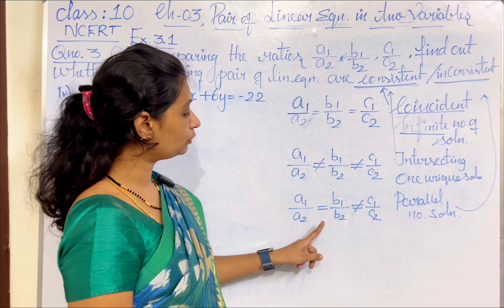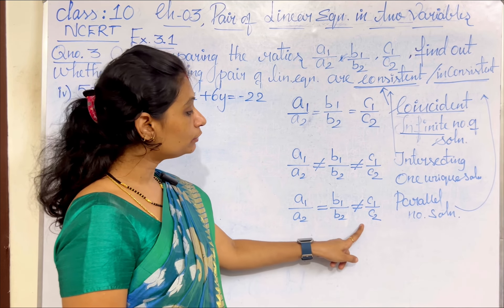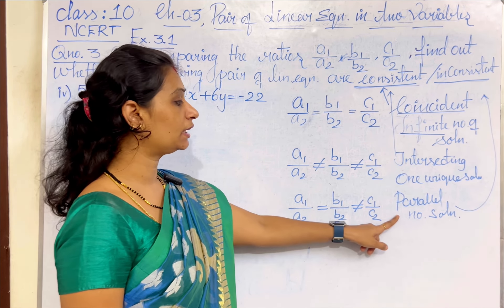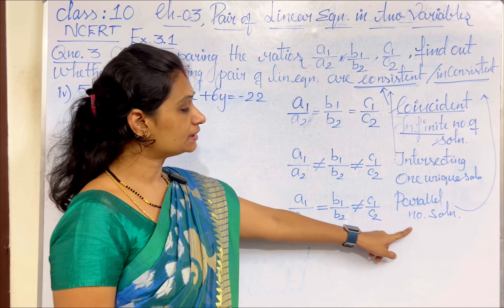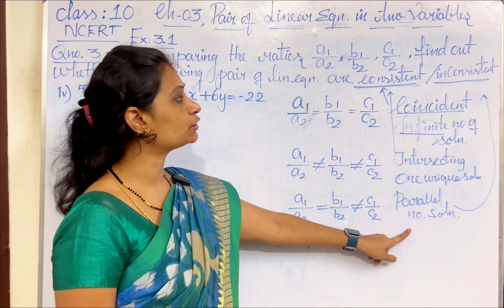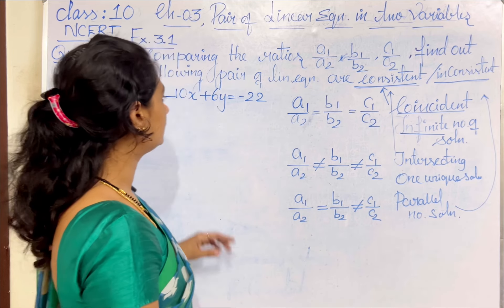The third case: if A1 by A2 equal to B1 by B2 not equal to C1 by C2, then the lines are parallel to each other. Since there is no point of contact, they don't have any solution, it comes under inconsistent.